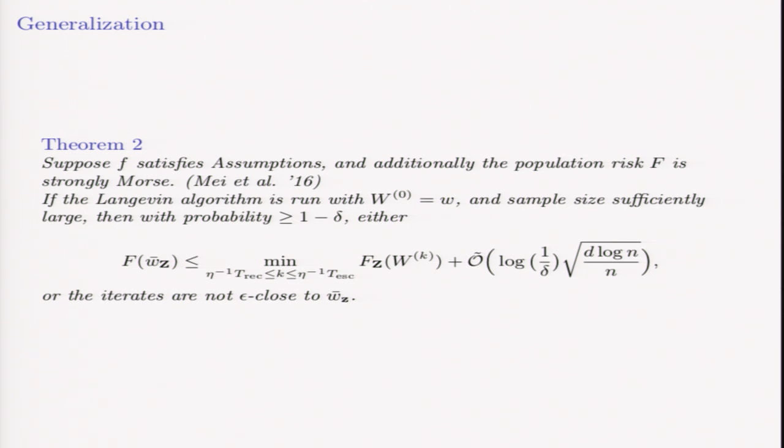There's a penalty term that scales like square root of D over N log N. This happens with high probability. If the algorithm does not hit an epsilon-approximate local minimum by the recurrence time, then we should be considering another local min.